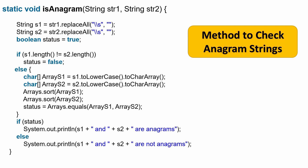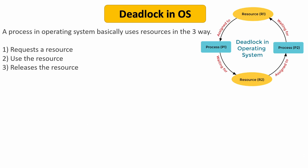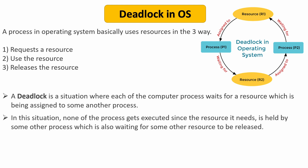The next question was what is a deadlock situation in operating systems. A process in an operating system basically uses resources in three ways: first the process requests a resource, then uses the resource, and after that releases it. A deadlock is a situation where each computer process waits for a resource which is being assigned to some other process. In this situation, none of the processes gets executed since the resource it needs is held by another process, which is also waiting for some other resource to be released. This complete situation is called a deadlock in operating systems.